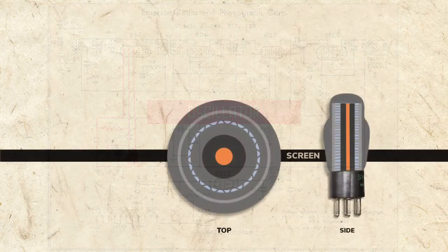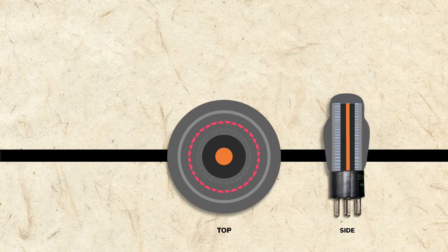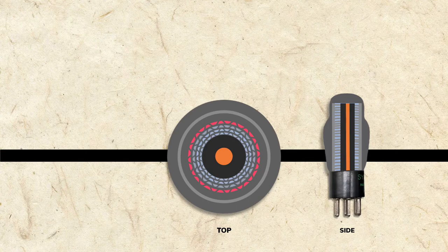Grid 4 is called the screen grid. It's positively charged to shield the electrons from the oscillator and antenna grids and help them move toward the plate.